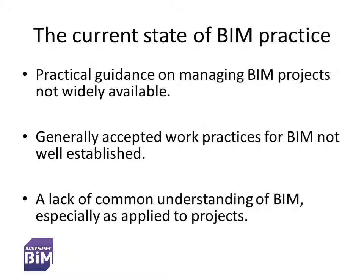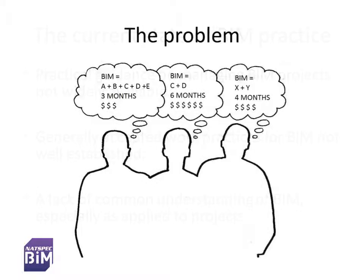These issues are still relevant today. When a group of people get together to work on a construction project, they will often have significantly different ideas and expectations about BIM. The client might ask for a full BIM on that project without having a clear picture of exactly what this means or how much it might cost. Or two consultants say they can do BIM — one might be an advanced user with well-developed systems for managing model information and exchanging it with others, while the other only uses 3D modelling within their own organisation. Despite the large differences in capabilities, both consider they are doing BIM.